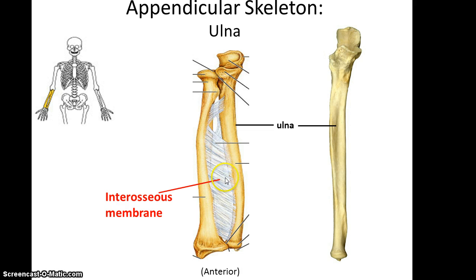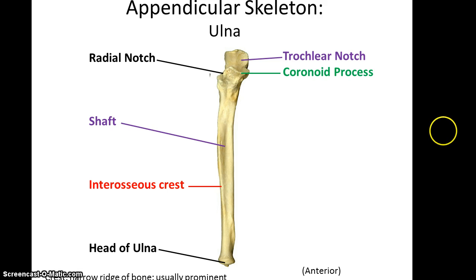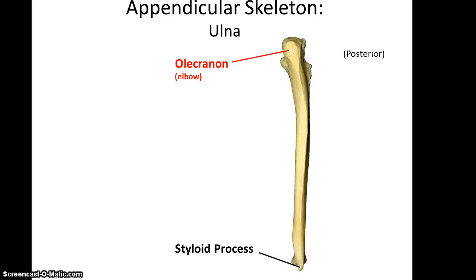The ulna is one of the forearm bones. It runs toward the pinky, and between it and the radius is the interosseous membrane, a connective tissue that connects the two bones. In the anterior view, at the proximal end you have the trochlear notch that fits into the trochlea of the humerus. You have the coronoid process in front, and on the side a radial notch where the radius's head will fit in. Along the shaft is the interosseous crest, where the interosseous membrane connects. At the distal end is the head of the ulna. In the posterior view you can see the olecranon, which is the bump that sticks out — if you're touching your elbow, that's actually what you're touching. And the styloid process at the far distal end, which is just a little bit of bone sticking out.